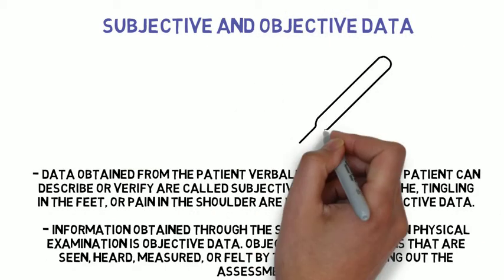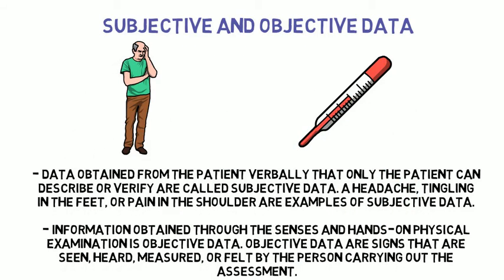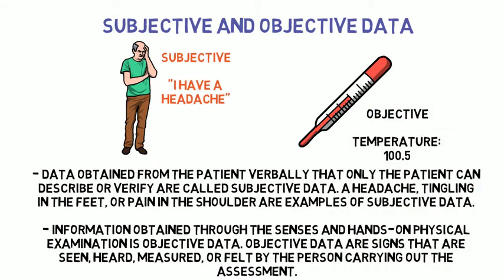Data obtained from the patient verbally, that only the patient can describe or verify, are called subjective data. A headache, tingling in the feet, or pain in the shoulder are examples of subjective data. Information obtained through the senses and hands-on physical examination is objective data — signs that are seen, heard, measured, or felt by the person carrying out the assessment. A helpful mnemonic: a king has subjects that tell him things, so subjective is what the patient tells you, and objective is what you find out.